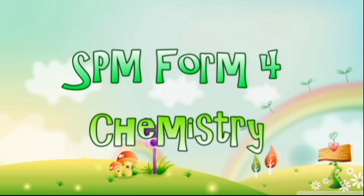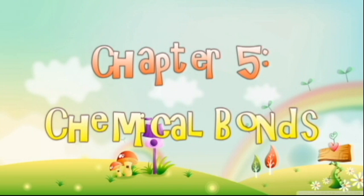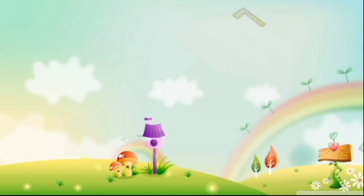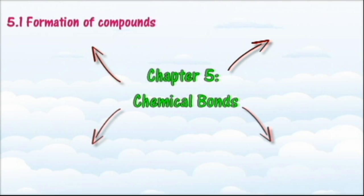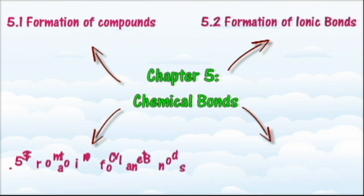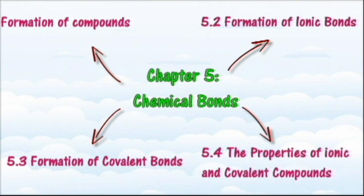SPM Form 4 Chemistry, Chapter 5: Chemical Bonds. In this video we will summarize the expected learning outcomes of Chapter 5 in the form of a concept map. In this chapter we will learn about the different types of chemical bonds and how they bring about different physical and chemical properties of substances. There are four main sections: 5.1 Formation of Compounds, 5.2 Formation of Ionic Bonds, 5.3 Formation of Covalent Bonds, and 5.4 The Properties of Ionic and Covalent Compounds.